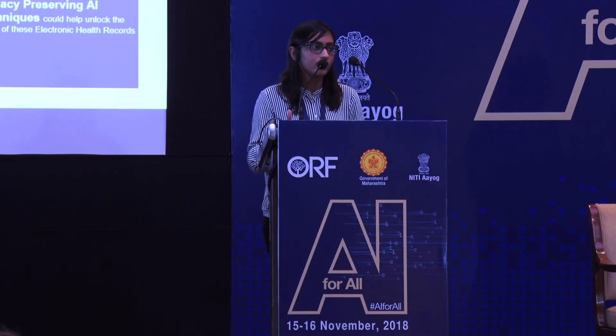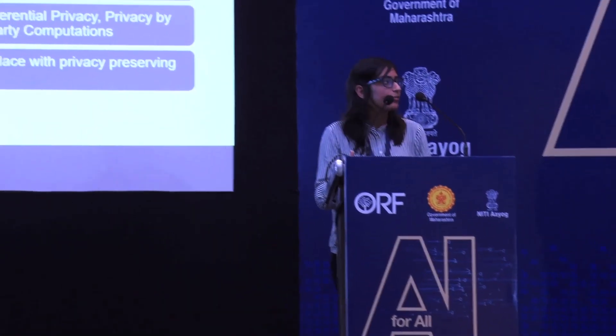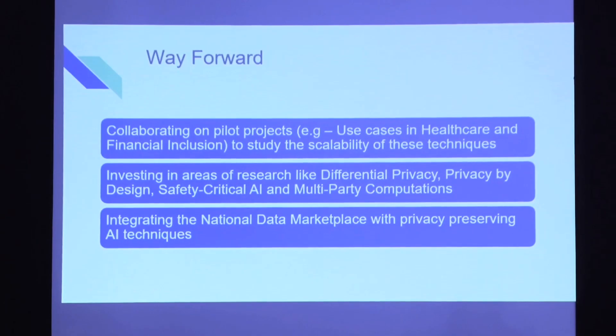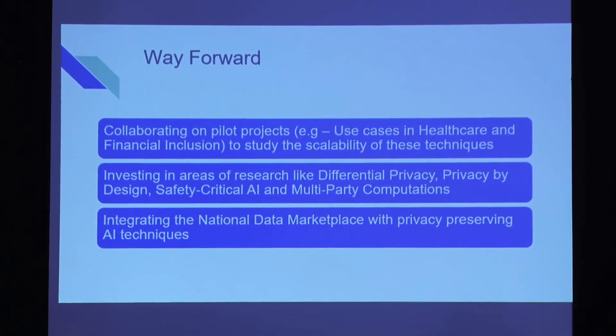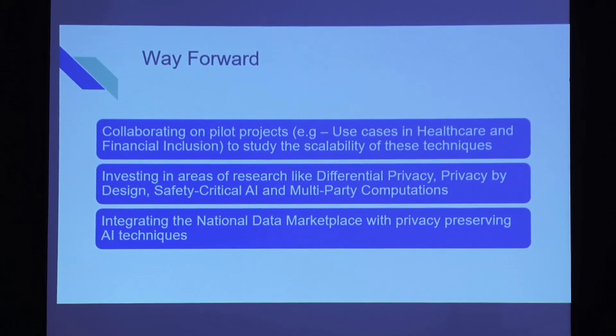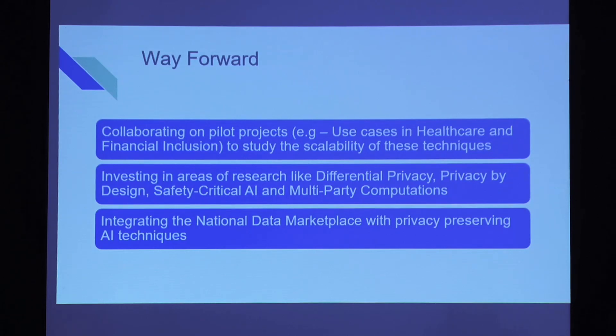This area is still nascent and research is gaining momentum, but solutions at scale are yet to be seen in India. If going forward we can prove scalability, it would be of value for us to embed this in our national infrastructure. The way forward would be collaborating on pilot projects — use cases in healthcare and financial inclusion — investing in research areas like differential privacy, privacy by design, safety-critical AI, and multi-party computation, and introducing these as research topics in the institutions we propose in our national strategy. Once the national data marketplace framework is complete, we can integrate it with privacy-preserving AI techniques.